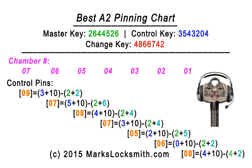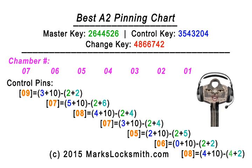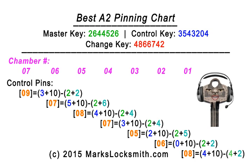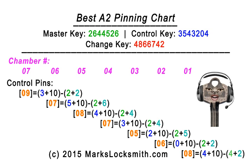Let's find the control pins. Where it says control key we have blue numbers. In chamber seven we got nine from: we added three from the control key plus ten, minus our master pins and bottom pin. Chamber six we got seven: five came from the control key plus ten, minus our master pins and bottom pin. Chamber five we got eight: four from the control key at third position, plus ten minus our bottom pin and master pin from our previous chart.